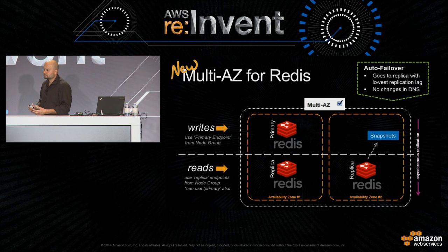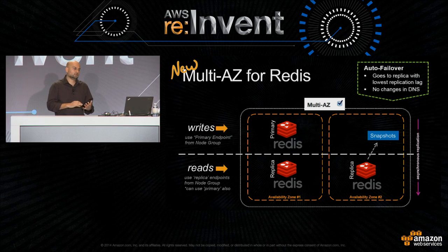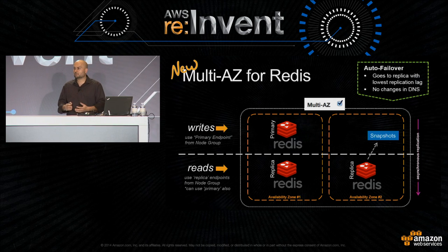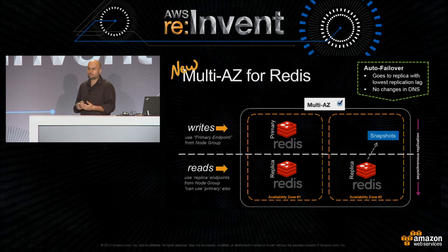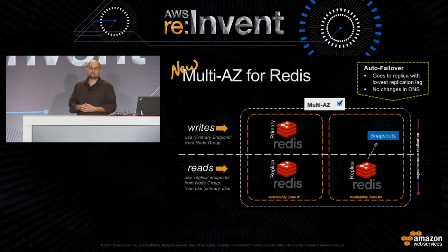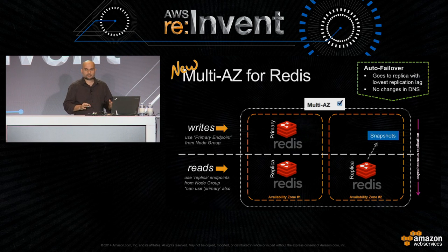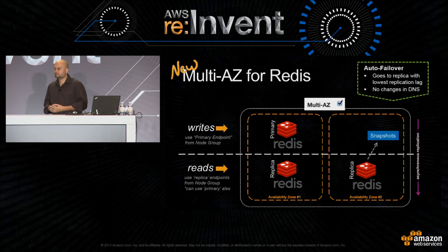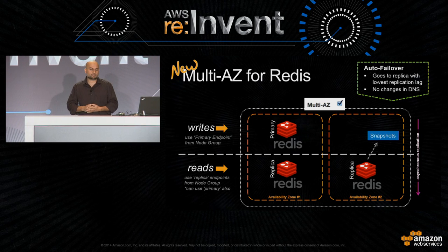Auto-failover — something recently announced — will automatically promote a replica in the event of an instance failure, an AZ failure, or a network issue. We'll detect that, figure out which of your replicas has the shortest lag behind the master, promote that one, and replace the replica that came out. All this happens without any changes to your configuration — it's a consistent DNS experience. To enable it, all you have to do is check the box that says Multi-AZ when you launch your cluster.